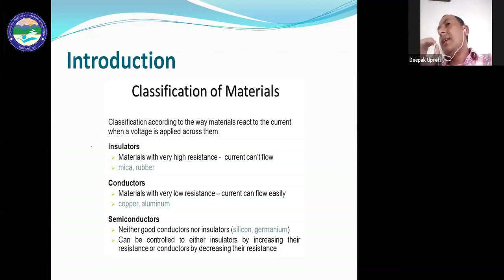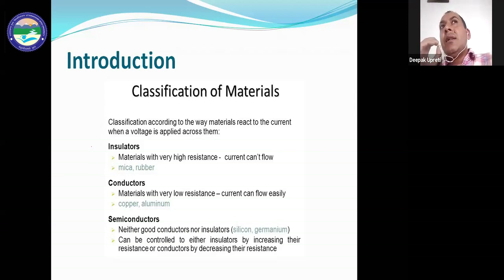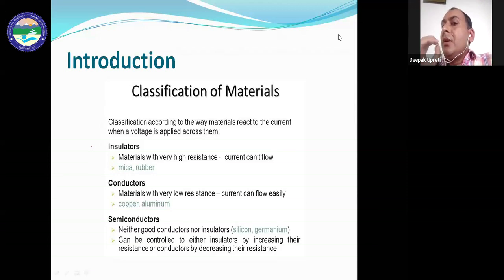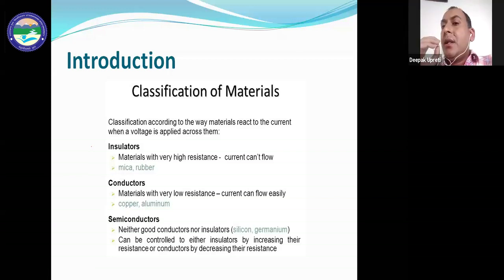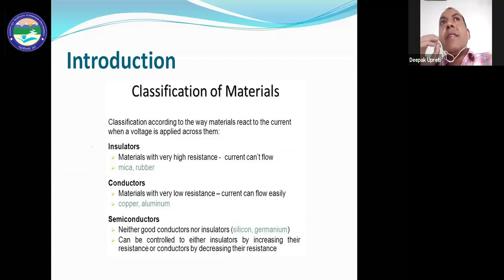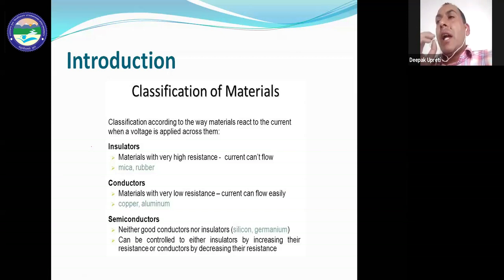Conductors are materials in which current can pass easily with almost zero resistance or very little resistance. The second type of material is an insulator, which means a material in which current cannot pass.